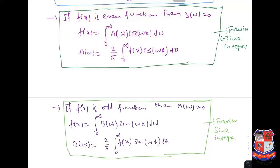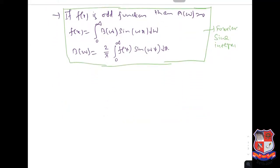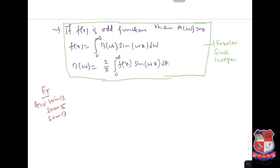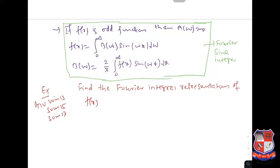You need to remember these formulae. Let us take one example — this was asked in GTU many times: Winter 13, Summer 15, Summer 17, and so on. The question is: find the Fourier integral representation of f(x) = 1 if |x| < 1, and 0 if |x| > 1.